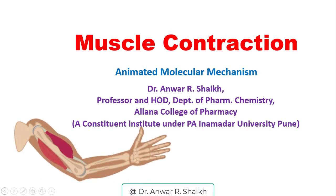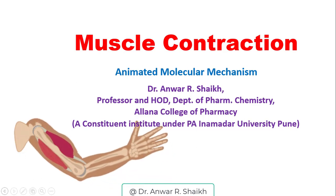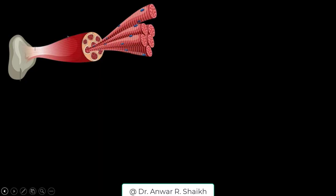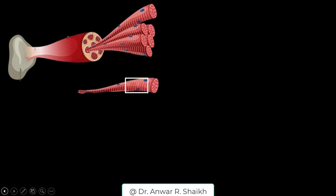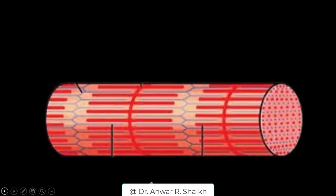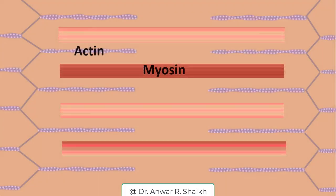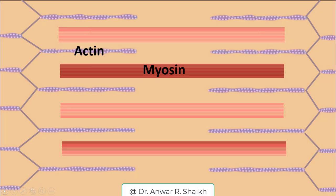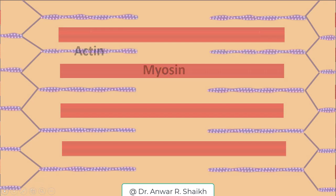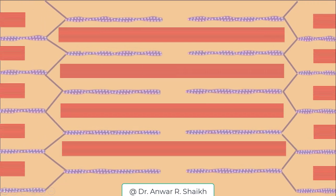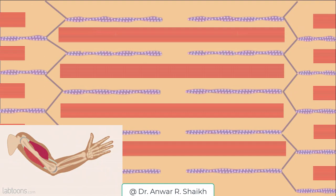Muscle contraction is at the basis of all skeletal movements. Skeletal muscles are composed of muscle fibers, which in turn are made of repetitive functional units called sarcomeres. Each sarcomere contains many parallel, overlapping thin actin and thick myosin filaments. The muscle contracts when these filaments slide past each other, resulting in a shortening of the sarcomere and thus the muscle. This is known as the sliding filament theory.